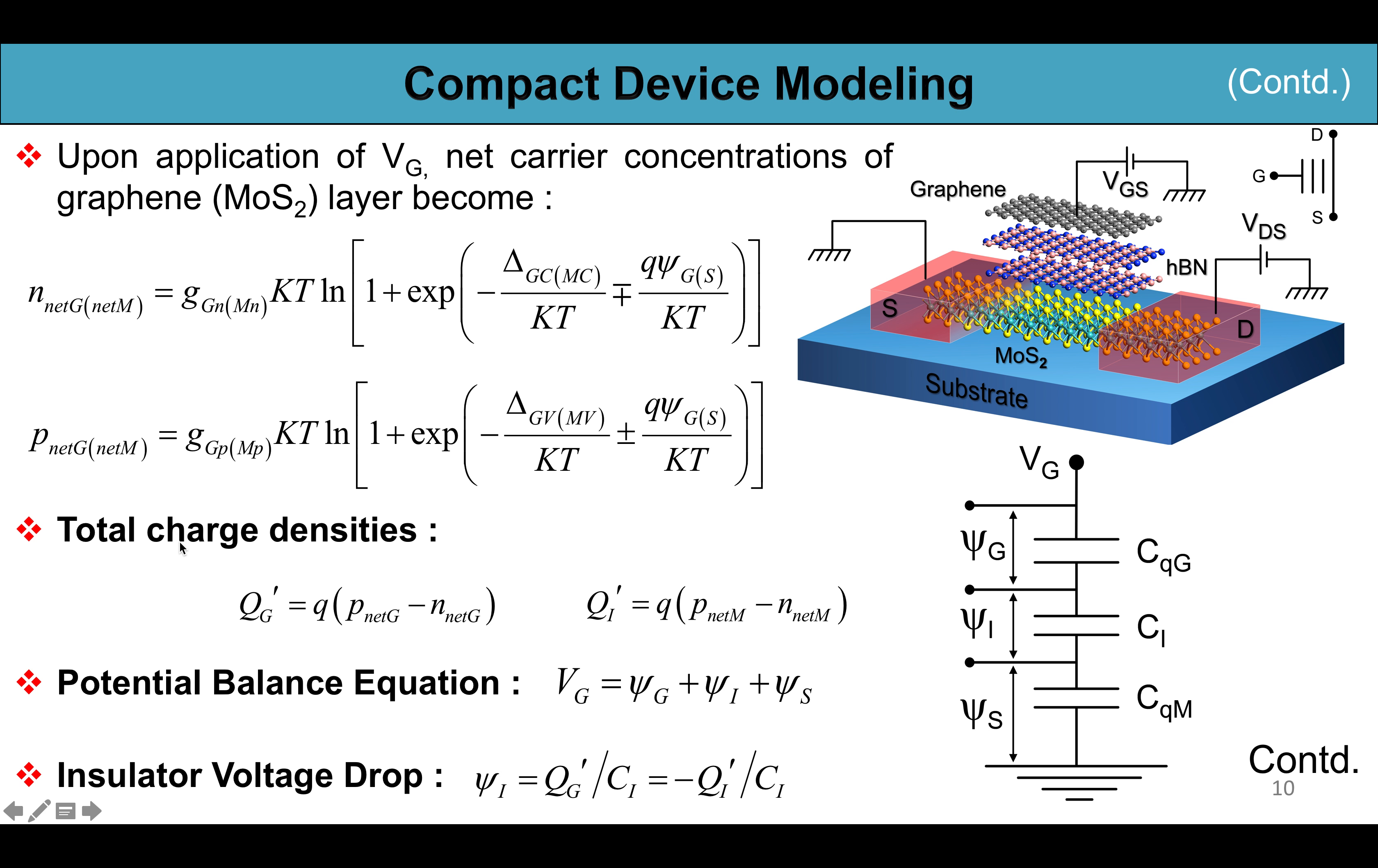Now the total charge densities in the device becomes QG' as Q times (pnet,G minus nnet,G) and QI' as Q times (pnet,M minus nnet,M). We have also got the potential balance equation as shown in the slide and also the insulator voltage drop psi i equal to QG' by CI'.